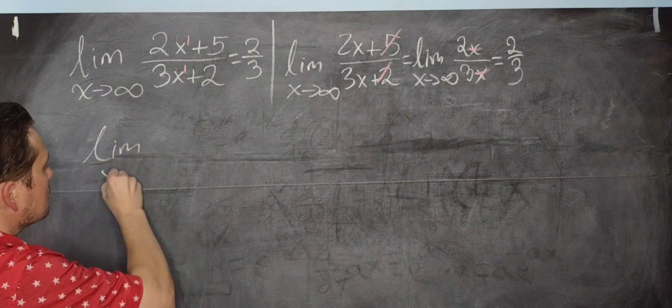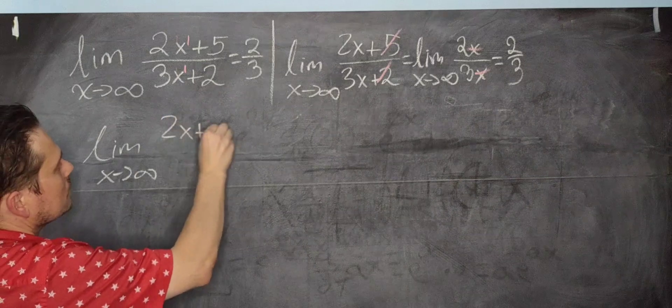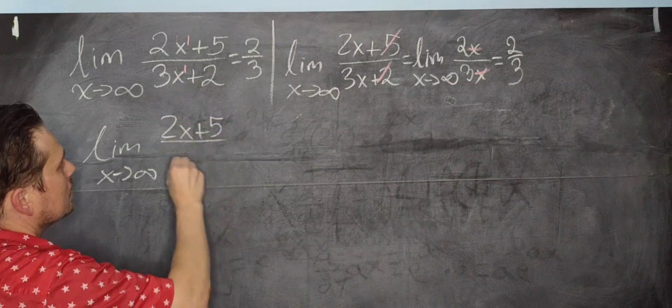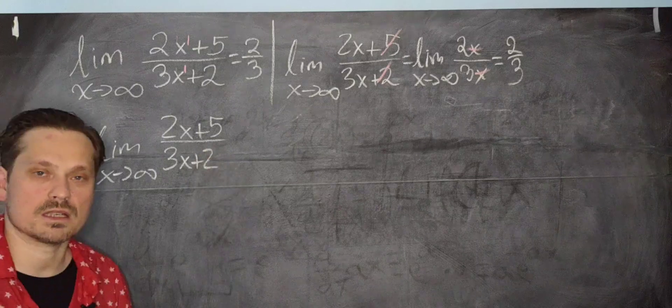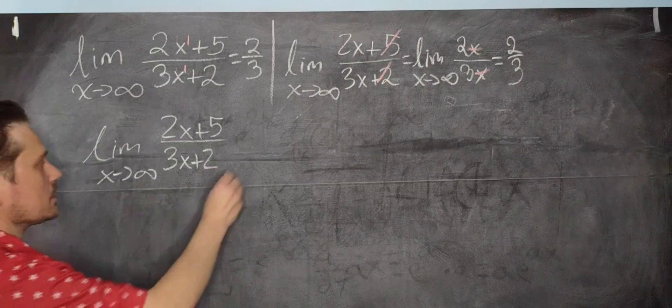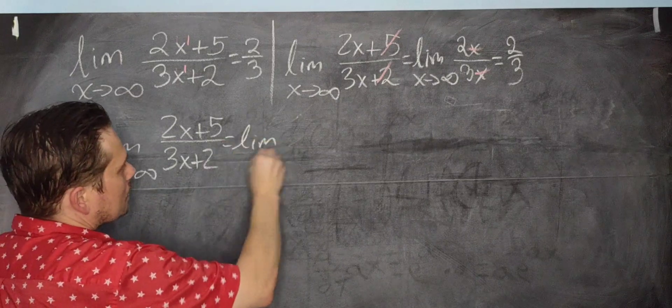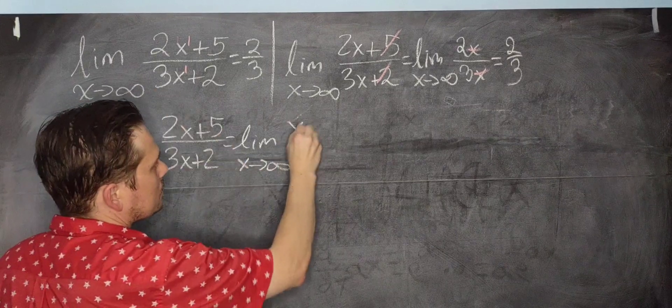The limit as x approaches positive infinity of 2x plus 5, and I'm going to divide this by 3x plus 2. So what we want to do is get rid of the x from here and here. One way to do it is to factor an x out. So you'd have the limit as x approaches positive infinity, and just pull the x out.